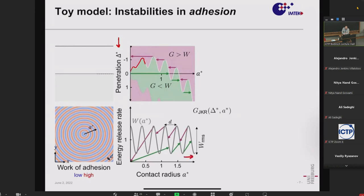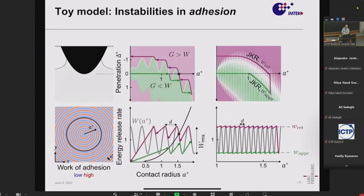With a much smaller amplitude, the system samples only the peaks of the work of adhesion field. You get a different effective apparent work of adhesion during approach — corresponding to the minimum of the work of adhesion field — versus retraction, which corresponds to the maximum. The hysteresis between them is proportional to the root-mean-square fluctuations on that surface. Looking at penetration versus area, we get nice JKR curves with these effective values of the work of adhesion. This toy model is essentially the gist of what I want to convey.